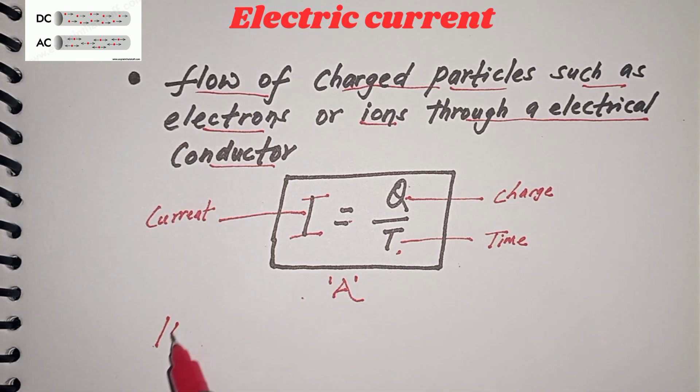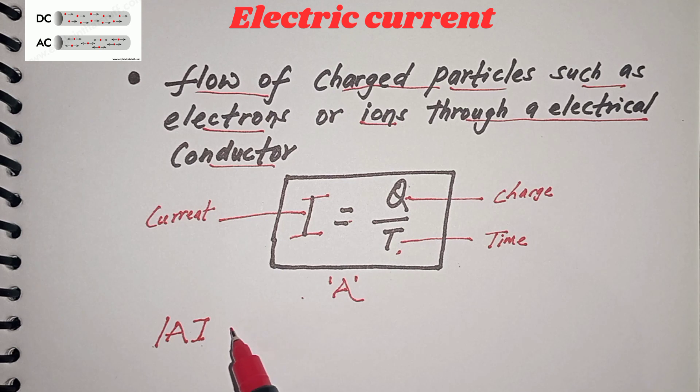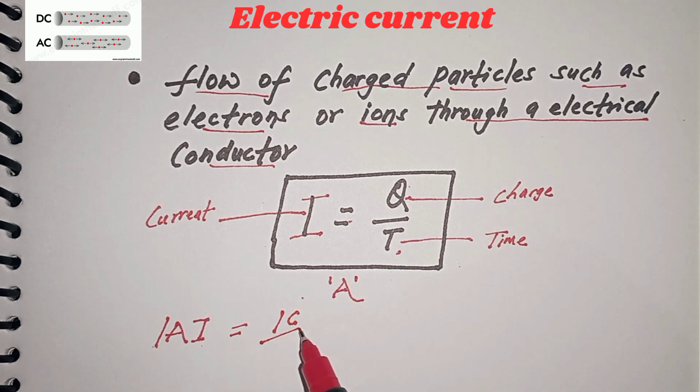is one ampere current? One ampere current is defined as a flow of one coulomb of charge per second, or